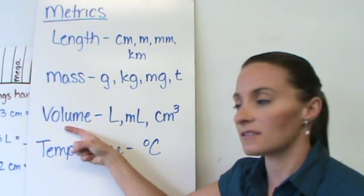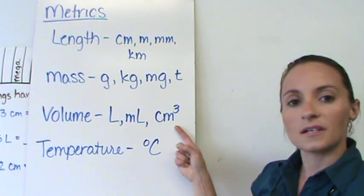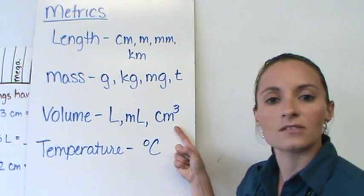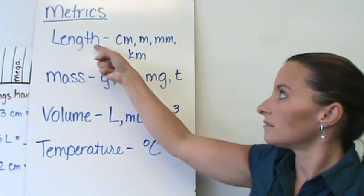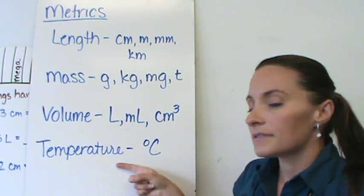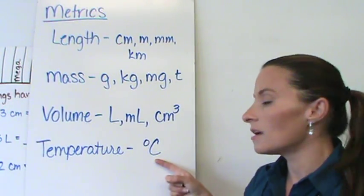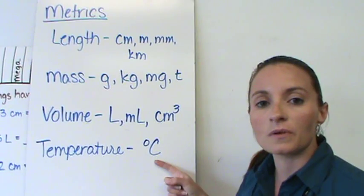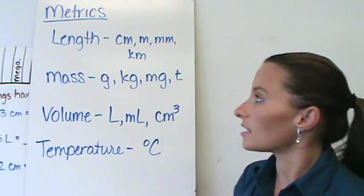Volume - in the metric system, we're going to use liters, milliliters, or centimeters cubed. We're going to talk about how centimeters cubed can be a measure of volume when centimeters are a measure of length. Temperature - the measurement in the metric system is degrees Celsius. We will not be using Fahrenheit; we'll be using degrees Celsius.